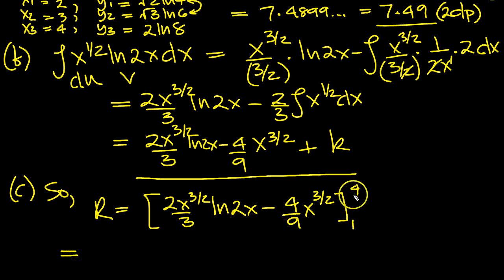Put 4 in here. 4 to the 3 over 2 is 4 to the half is 2, and 2 cubed is 8. 8 times 2 is 16. So that's 16 over 3 ln 2x is ln 8. Minus, so that's that value. 4 to the half is 2, 2 cubed is 8, 8 times 2 is 16, 16 over 3 log 8. Minus 4 ninths. 4 to the 3 over 2 is 8. So this is 4 eighths of 32 here. So I'll put it down as 32 ninths. That's the top value.